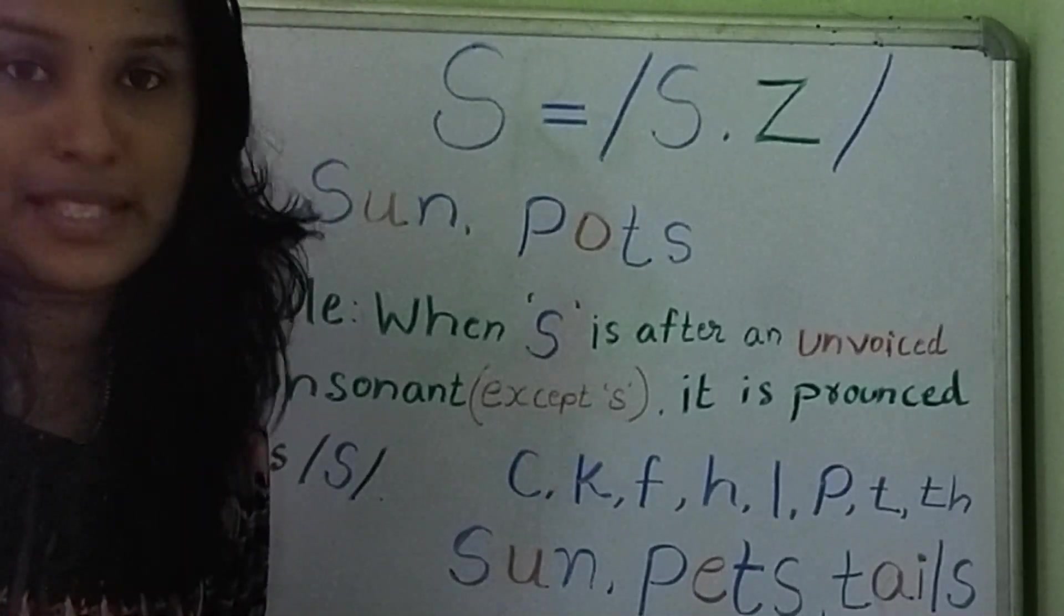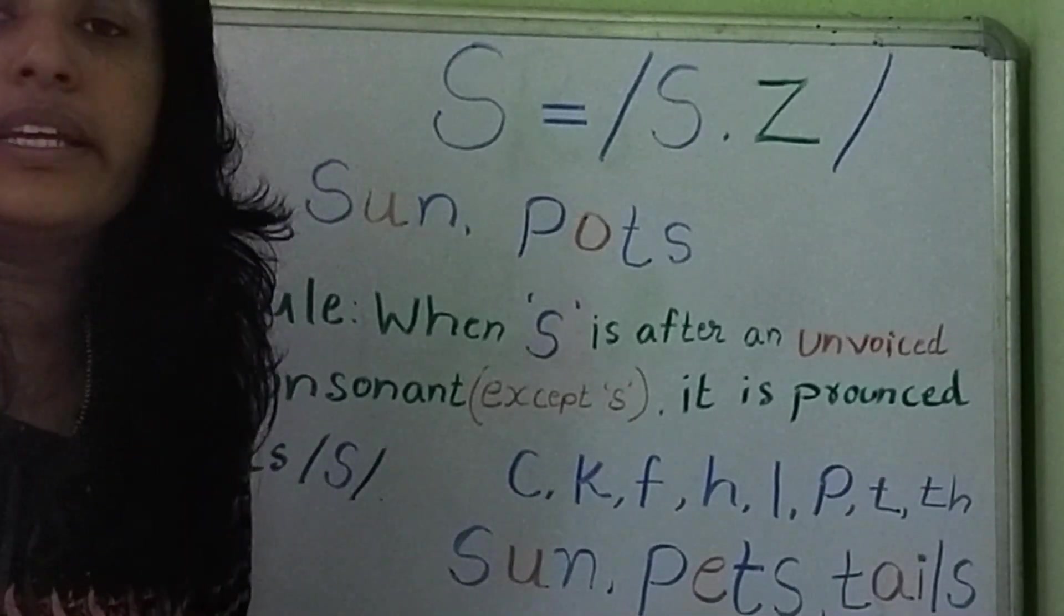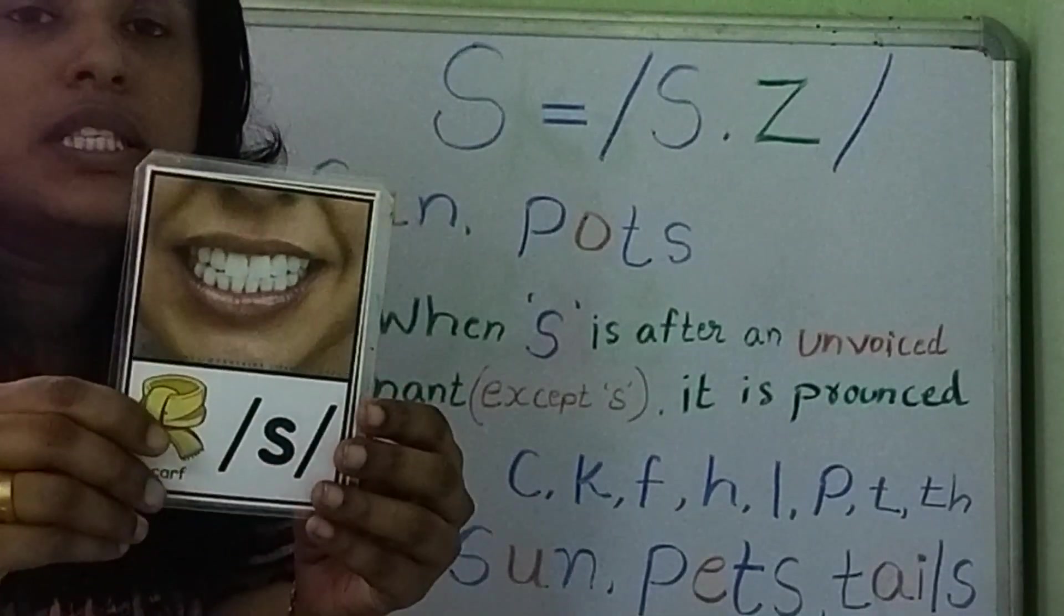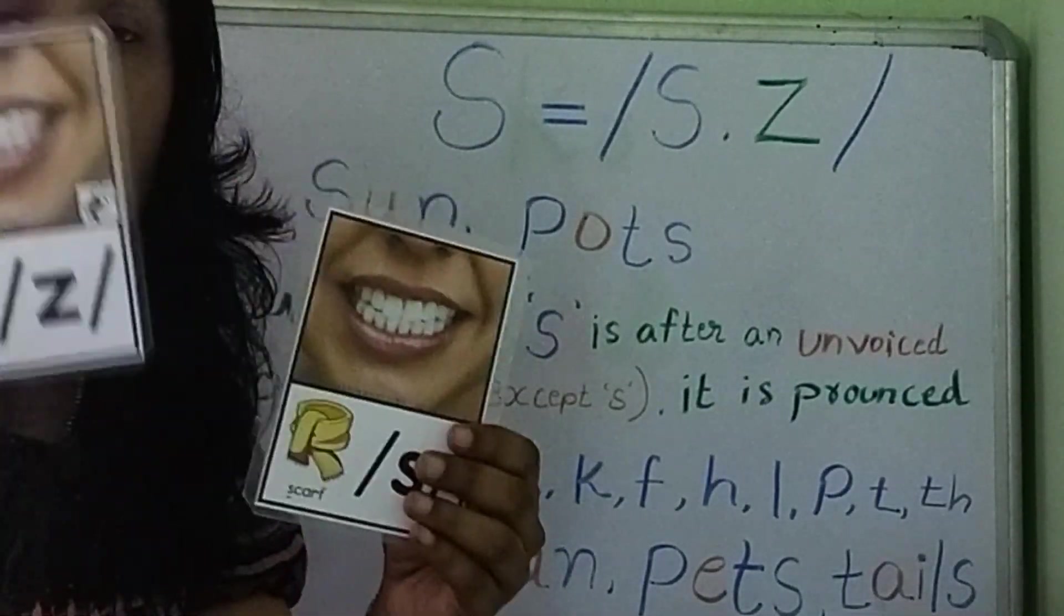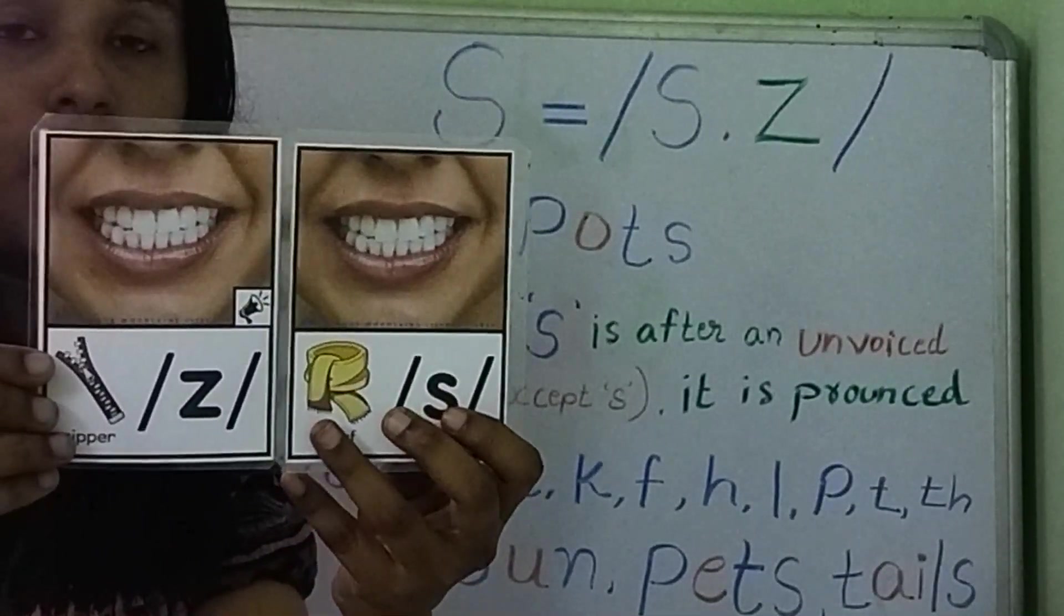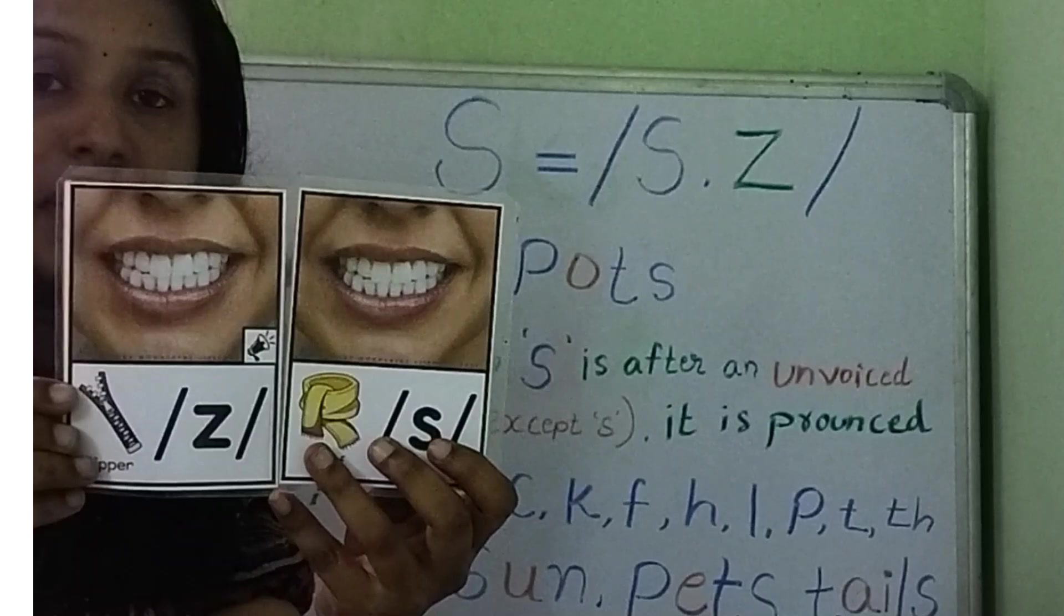Hi all, so today let us learn the sound of letter S. Letter S has two sounds. The first sound is S. The second sound is Z. Here you see both sounds - both mouth formations are the same.